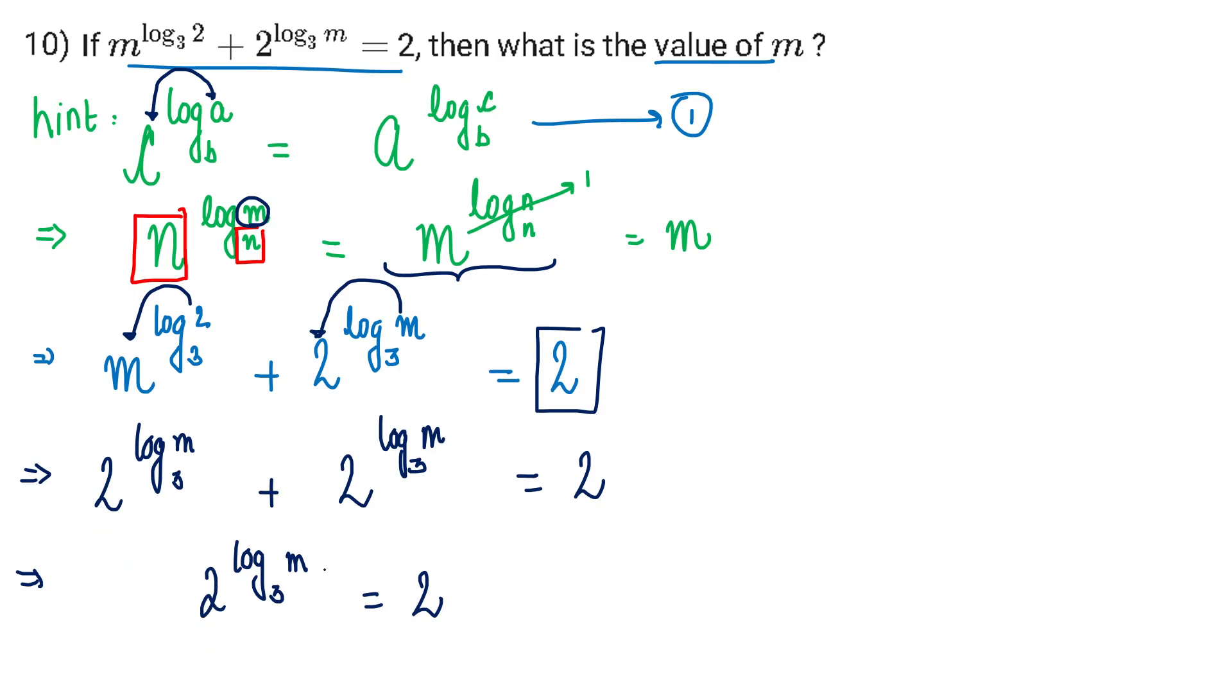So this is the final expression I'm getting. Again, the bases are the same, so I can compare the power part. Log m base 3 plus 1 equals 1. The 1s get